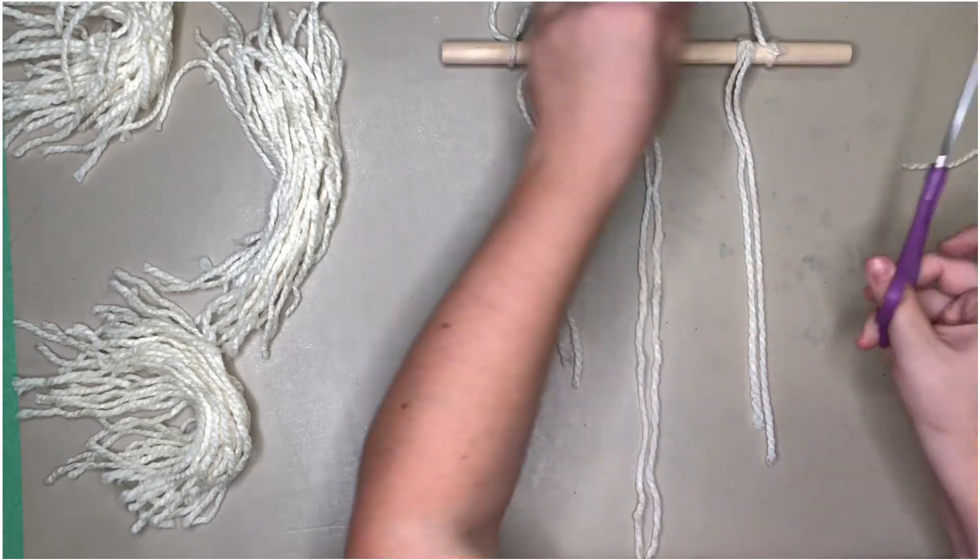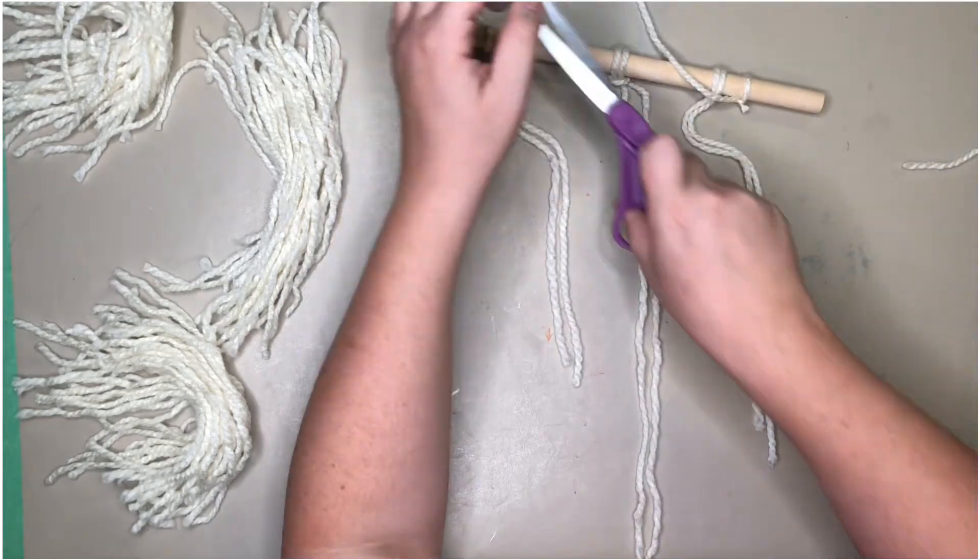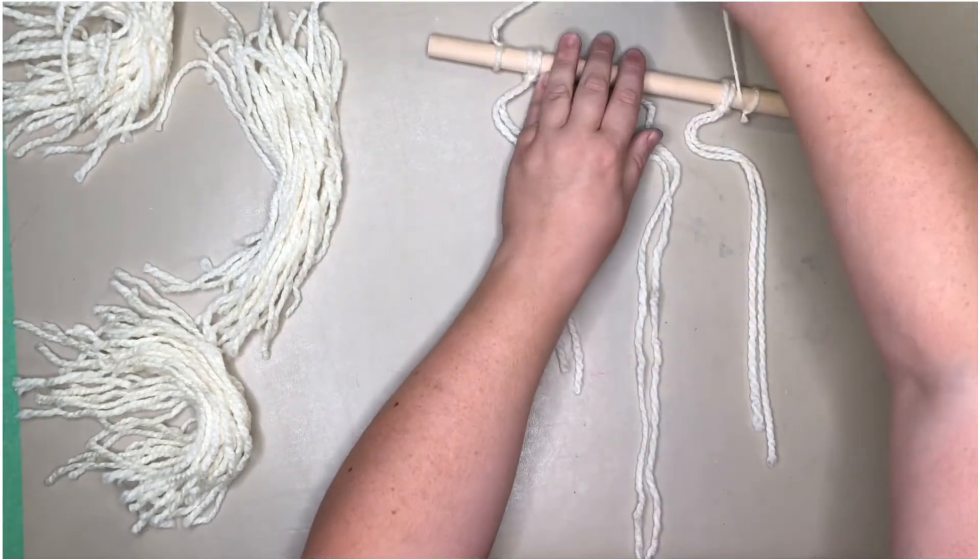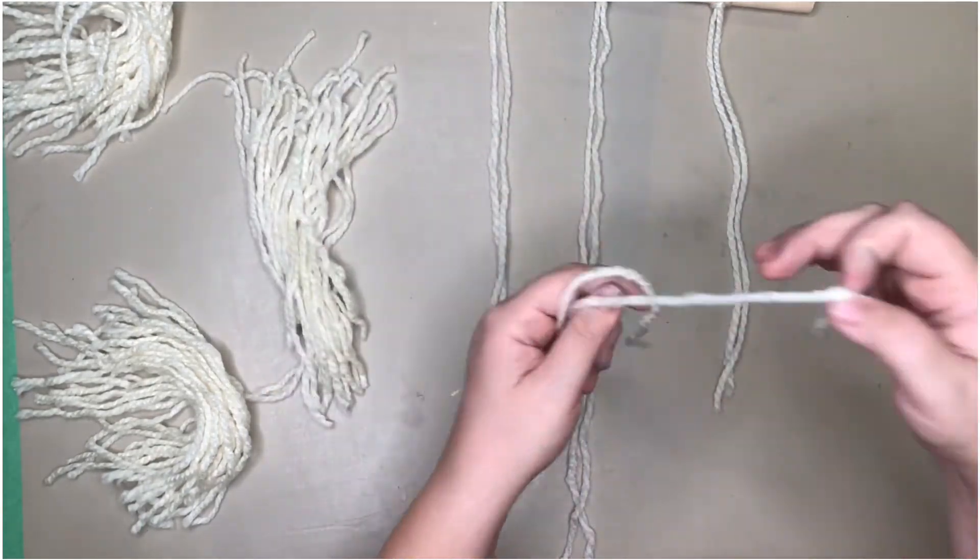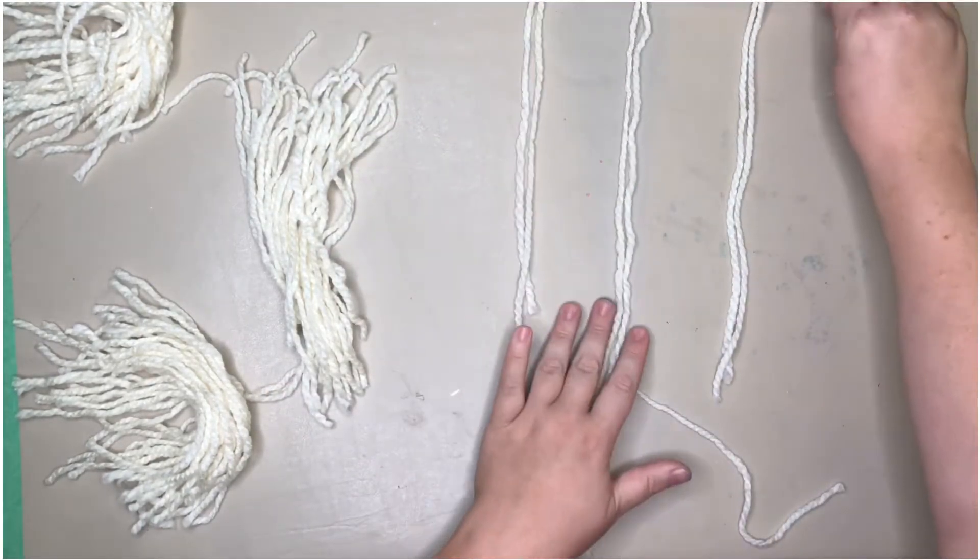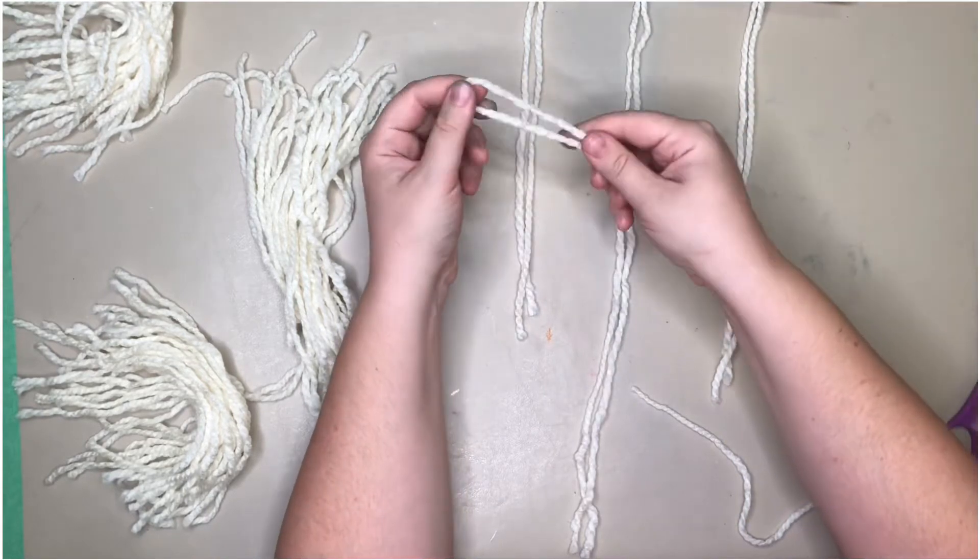So one feather on each one of the hanging strings. I decided I wanted those feathers to be three different lengths. Again, you can make them all the same length or you can put the shortest in the middle, however you like it.